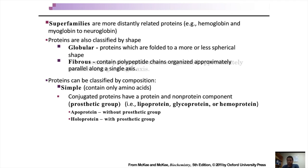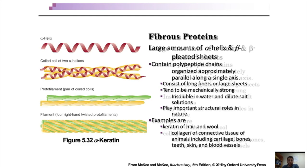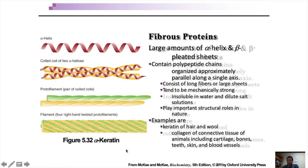Before moving on to the tertiary protein structural level, we should note that proteins can be classified based on their structure. Fibrous proteins contain mostly simple secondary structures — typically high proportions of alpha helix and beta pleated sheets — and as a consequence of their rod-like structure, they are more structural proteins with no dynamic role. Examples of fibrous proteins are collagen, silk fibroin, and alpha-keratin. They mostly consist of long fibers or sheets, tend to be mechanically strong, are insoluble in water and dilute salt solution, and play important structural roles in nature.